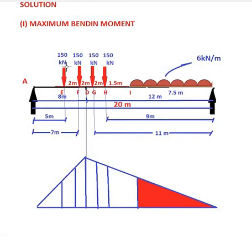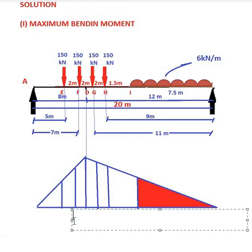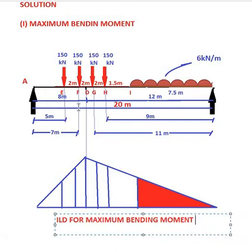The load traverse is from right to left, so I have placed the load setup of 4 point loads and then the UDL. Then we draw the influence line diagram for maximum bending moment. Now I am going to find the ordinate at each load point. Keeping the ordinate at D as the benchmark, we find the ordinates at E, F, G, H, and I. The shaded portion represents the area of the triangle where the uniformly distributed load is acting.